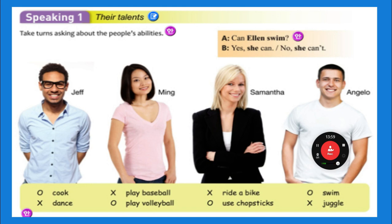Let's look at Ming. Listen and repeat. Can Ming play baseball? No, she can't. Can Ming play volleyball? Yes, she can. Can Samantha ride a bike? No, she can't. Can Samantha use chopsticks? Yes, she can. Can Angelo swim? Yes, he can. Can Angelo juggle? No, he can't.